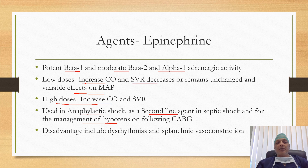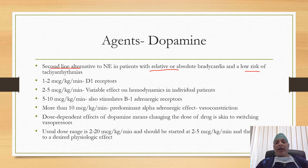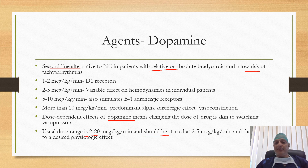Disadvantages of epinephrine include dysglycemia and splanchnic vasoconstriction. Dopamine is a second-line alternative to norepinephrine in patients with relative or absolute bradycardia and low risk of tachyarrhythmias. It acts on different receptors at different dosages, and this dose-dependent effect means changing the dose of dopamine is akin to switching vasopressors. The usual dose range is 2 to 20 micrograms per kg, started at 2 to 5 micrograms and titrated to the desired physiological effect.